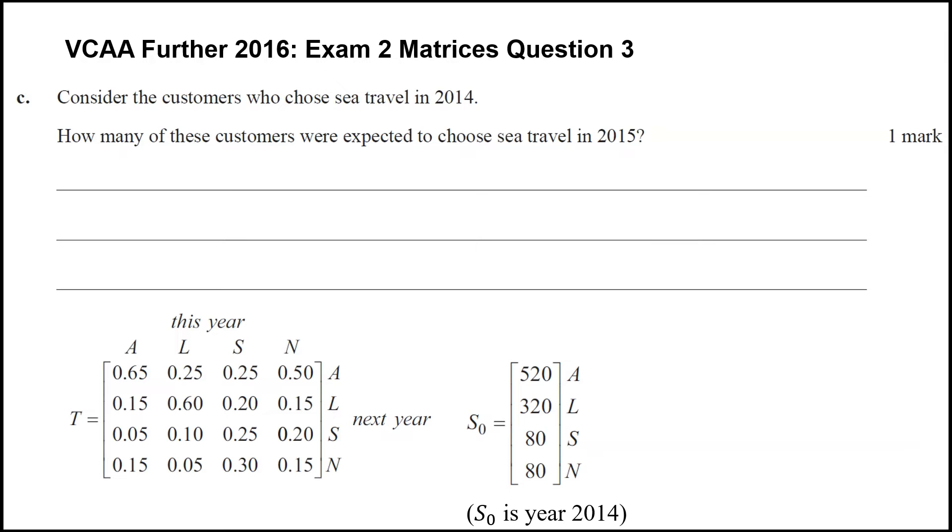Now what we care about is the customers who chose sea travel in 2014. Well, where are they? They are those 80 customers here. And we want to know in 2015, well that's going to be S1. How many of these 80 end up in this C row in 2015?